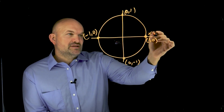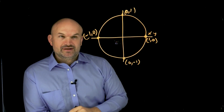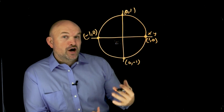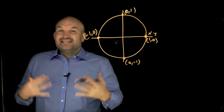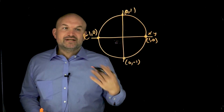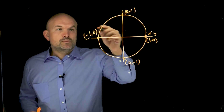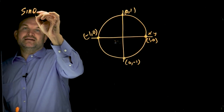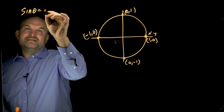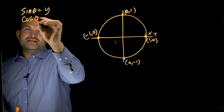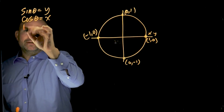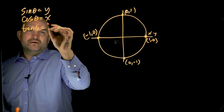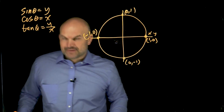Remember, these are coordinate points on an XY grid, so we can give them an XY designation. The sine of an angle equals the Y coordinate. The cosine of an angle equals the X coordinate. And the tangent of an angle equals the Y over X relationship.